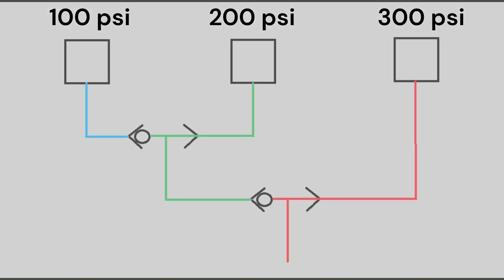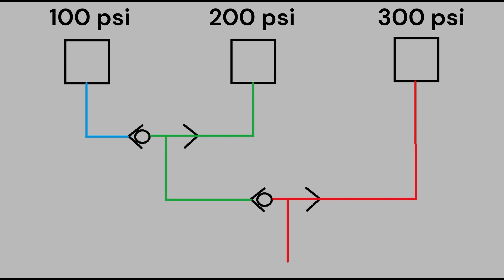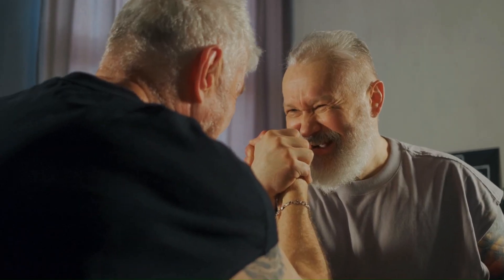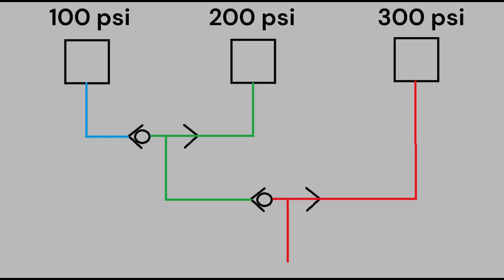Let's look at a specific example of an isolated load sense circuit. Here we have three functions all demanding different pressures. They each send out a load sense signal that is routed through a daisy chain of shuttle valves. Finally, the highest pressure signal is sent on to tell the pump how much pressure it should build.